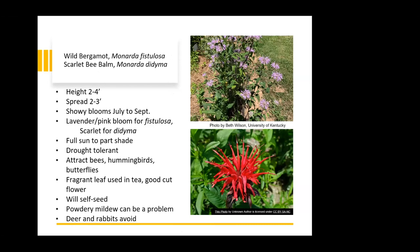The bergamots — called bee balm — are ones commonly used in tea. They're two to four feet tall and spread two to three feet. Fistulosa has purple blooms and didyma has scarlet blooms, but both are drought tolerant, full sun to part shade, and attract bees, hummingbirds, and butterflies. They can self-seed. Both can have powdery mildew, which can be a problem — you can spray with baking soda or potassium carbonate to help. Deer and rabbits avoid them both.